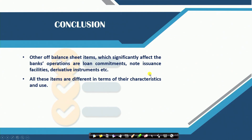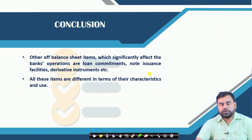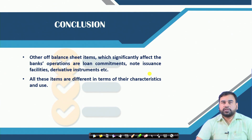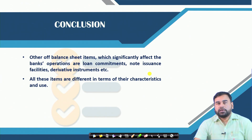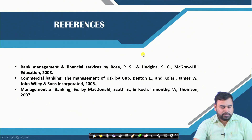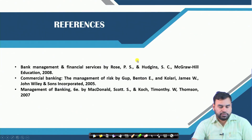These are the things discussed today, which include the different types of off-balance sheet items that significantly affect bank operations — loan commitments, note issuance facilities, derivatives instruments, and securitization. All these items have significant implications from the bank's performance point of view and differ in terms of their characteristics. These instruments are really important whenever we discuss the off-balance sheet items of a commercial bank. Thank you.